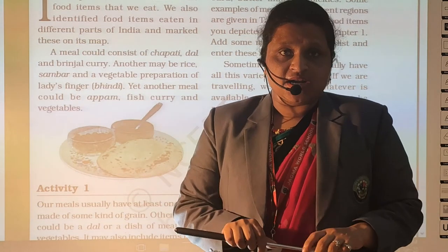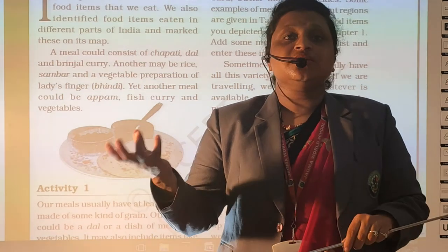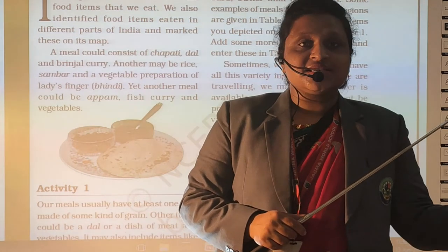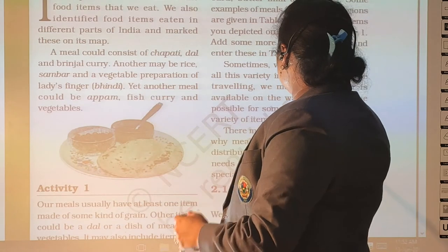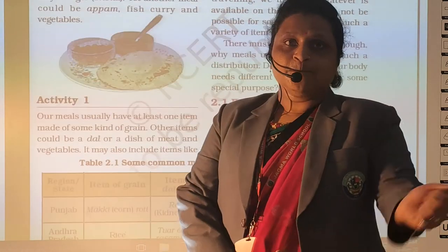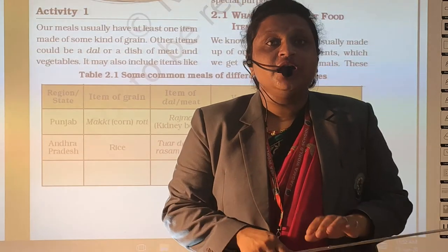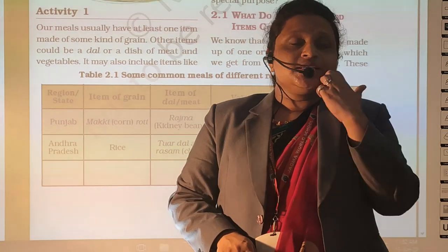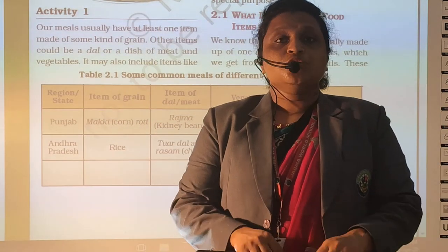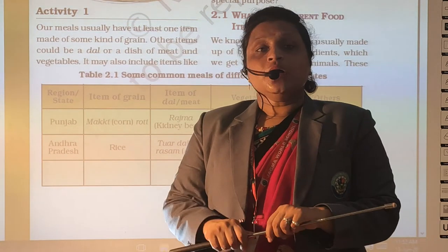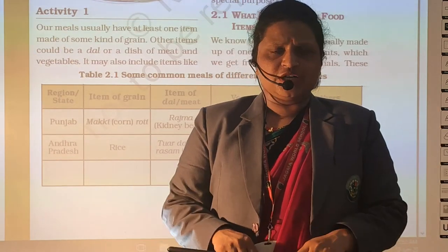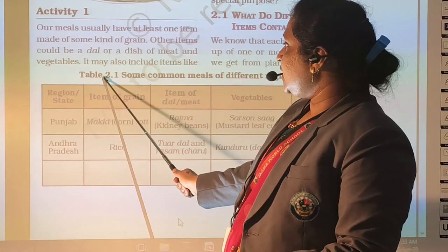If we are habitual to eating Maharashtrian food like Puran Poli, Bajari Roti, or vegetables, we can't expect the same food in another state. There must be some reason our body needs different kinds of food for special purposes. Our body needs different types of food for different purposes. For example, if we want quick energy, we eat bananas — bananas have a high amount of carbohydrates, so we get energy very quickly. Every grain has different types of nutritional components.